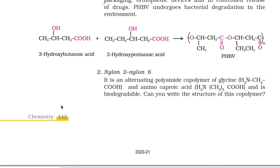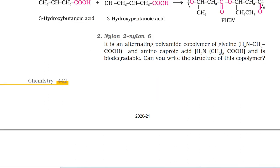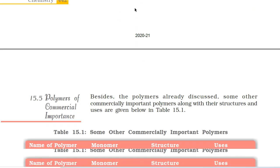Second, Nylon 2-Nylon 6. It is an alternating polyamide copolymer of glycine (H2N-CH2-COOH) and amino caproic acid (H2N-(CH2)5-COOH) and is biodegradable. Can you write the structure of this copolymer?